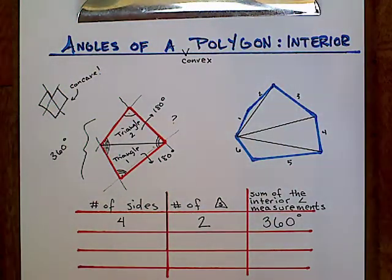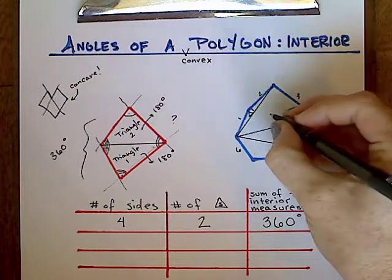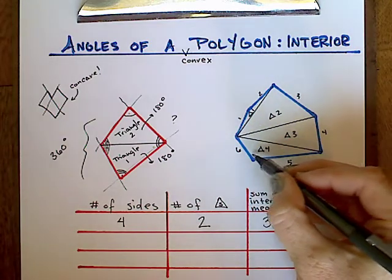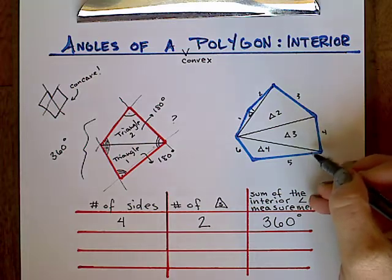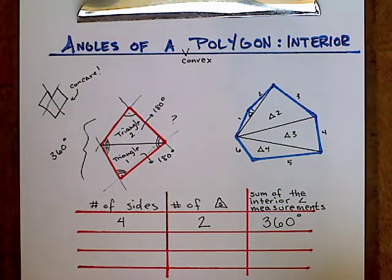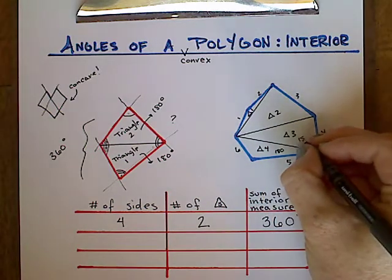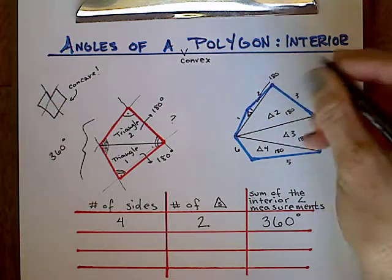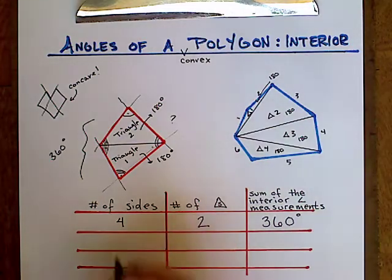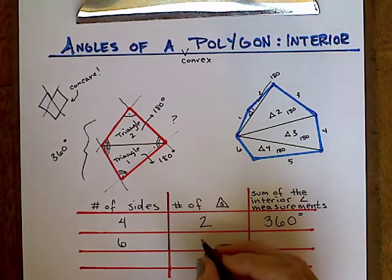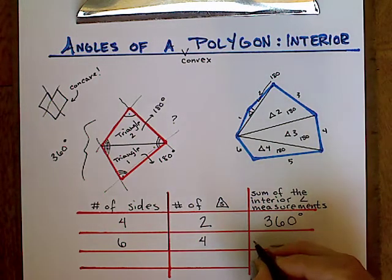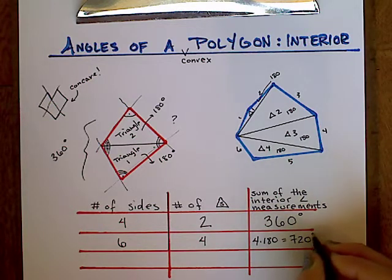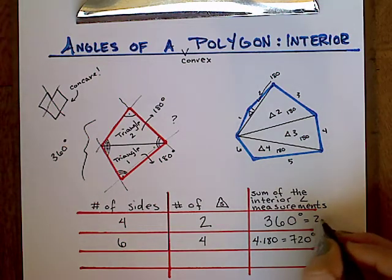Here I'm able to cut this into four different triangles, each one having a sum of interior angle measurements of 180 degrees. All of their angles match up with the interior angles of the polygon. So all I have to do is add 180 four times. With six sides cut into four triangles, four times 180 equals 720. So for any six-sided convex polygon, the sum of the interior angle measurements is 720 degrees.